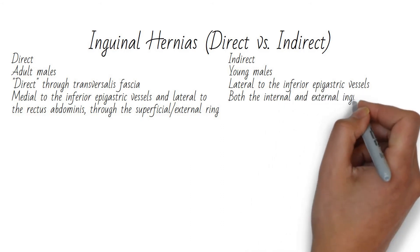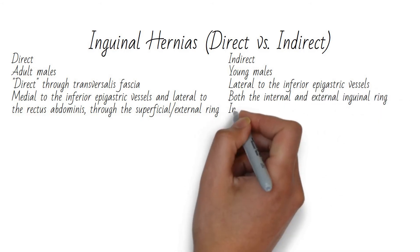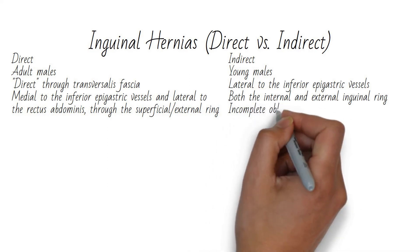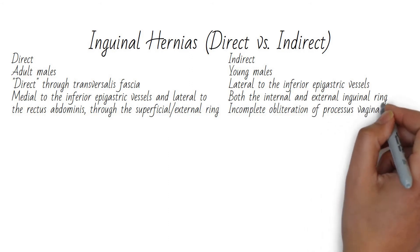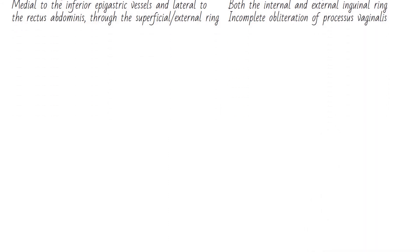This type of hernia occurs due to a failure of the processus vaginalis to obliterate, allowing a patent channel through which bowel can herniate. These hernias occur outside of Hesselbach's triangle.